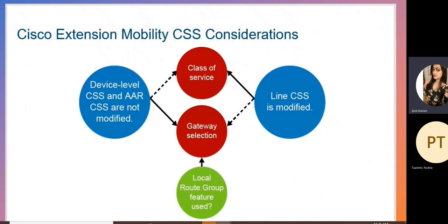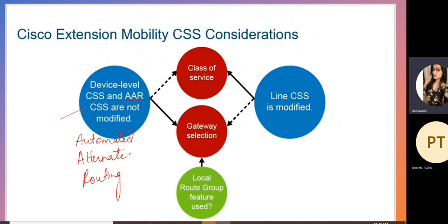Now, extension mobility CSS consideration: in extension mobility, the device-level CSS and AAR CSS — Automated Alternate Routing CSS — are not modified. Device-level CSS cannot be changed in extension mobility, but the line CSS is modified. Because we are not taking the device from one location to another, we do not need to modify the device-level CSS. We modify the line-level CSS for the profile. We can also select the gateway as a local route group feature — whatever gateway we want to use, we can select that as well in extension mobility.